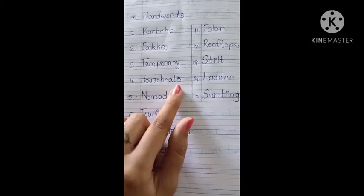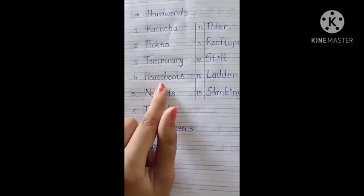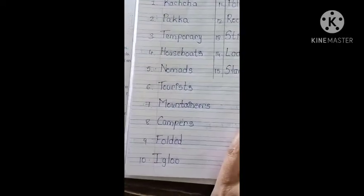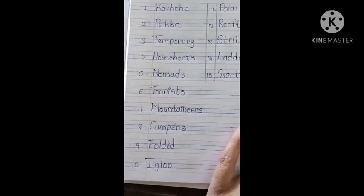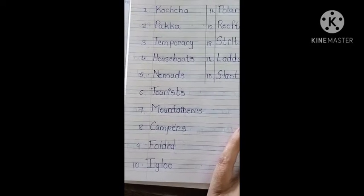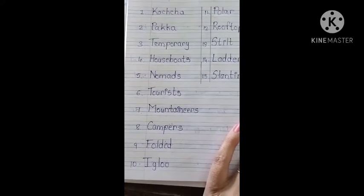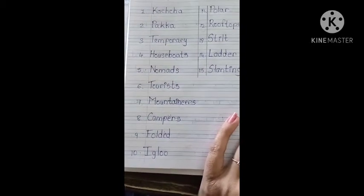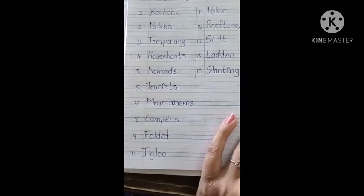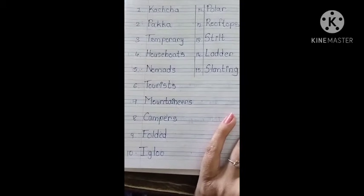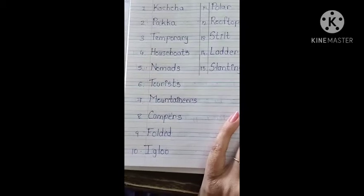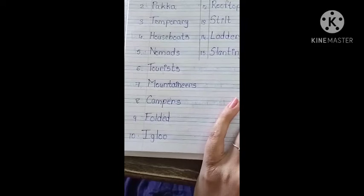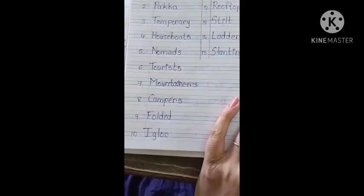Fourth: H-O-U-S-E-B-O-A-T-S, Houseboats. Fifth: N-O-M-A-D-S, Nomads. Sixth: T-O-U-R-I-S-T-S, Tourists. Seventh: M-O-U-N-T-A-I-N-E-E-R-S, Mountaineers. Eighth: C-A-M-P-E-R-S, Campers.